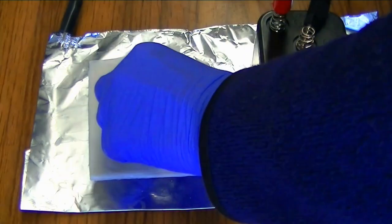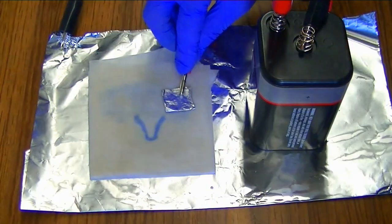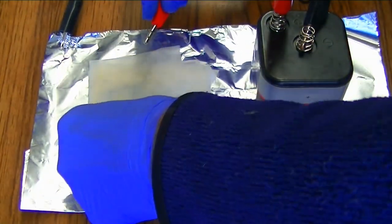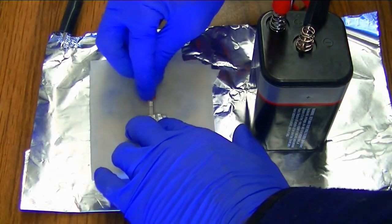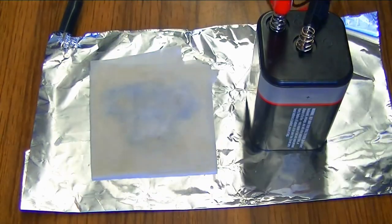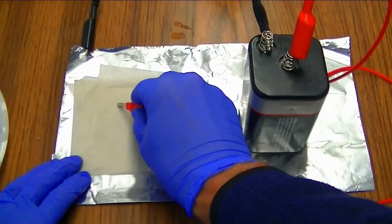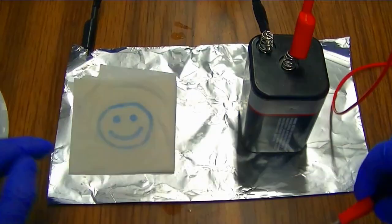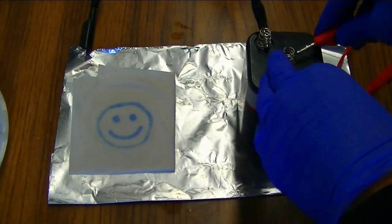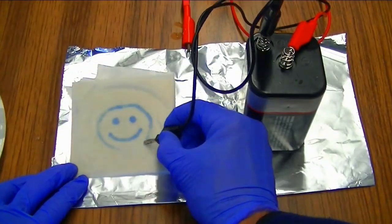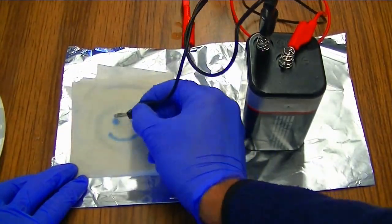In this case we see that the positive terminal of the battery when in contact with metals on the surface of the paper towel have the opposite effect and they erase the blue color. This erasing effect can also be done by touching the wire attached to the positive terminal to any blue design that's been made on the paper towel.